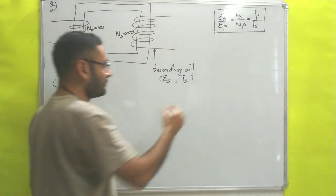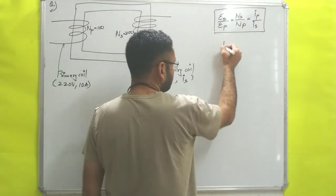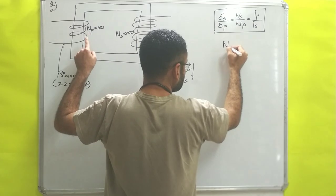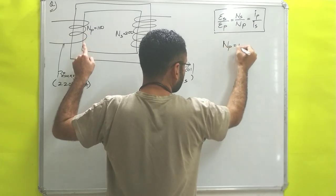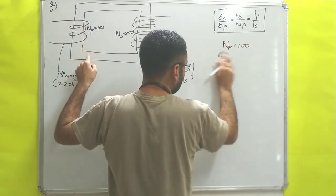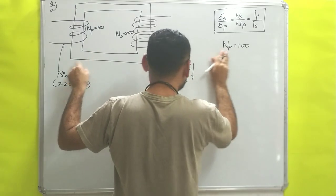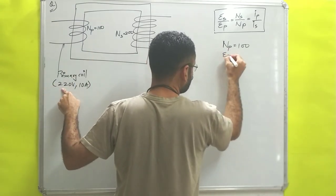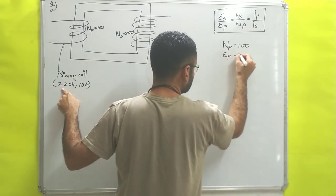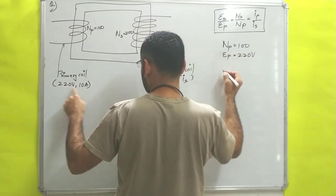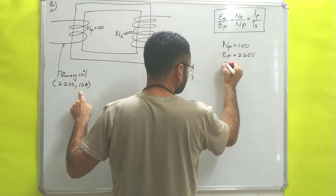First of all we will collect the data. Number of turns on the primary side NP = 100. On the primary side, potential EP = 220 volts.